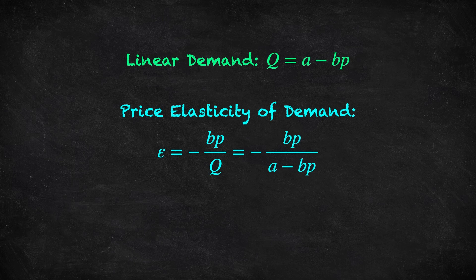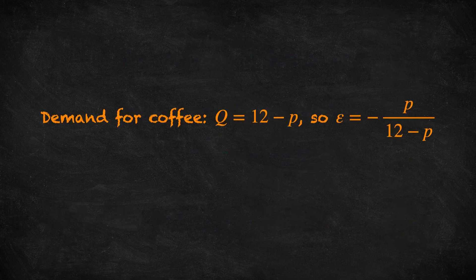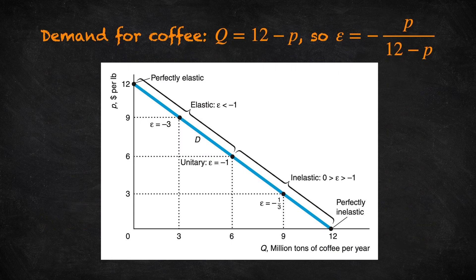Consider the demand for coffee example: q = 12 − p. The price elasticity of demand equals −p/(12 − p). Looking at the diagram, we can see how elasticity varies with the price level. When the price equals 6, elasticity equals −1 — we call this unit elastic. When the price is less than 6, elasticity is between 0 and −1; for example at price 3, elasticity equals −1/3 — the inelastic part of the demand curve. When the price is above 6, elasticity is less than −1; for example at price 9, elasticity equals −3 — the elastic portion.